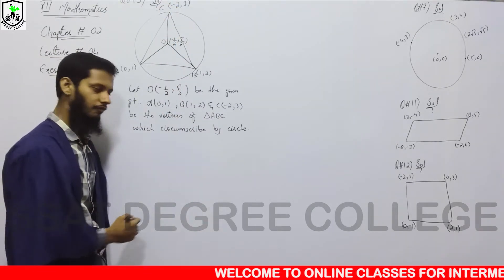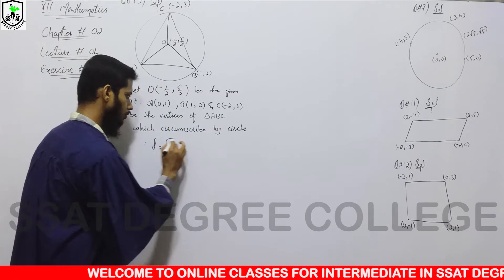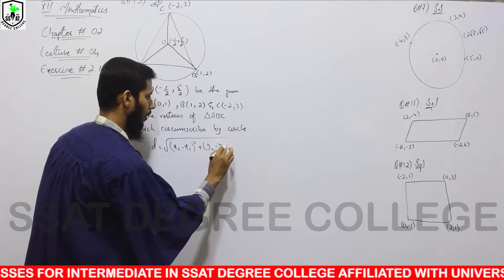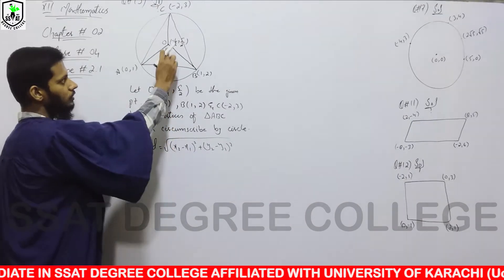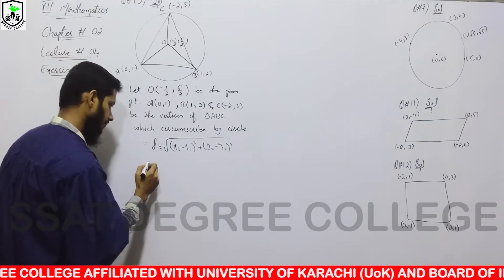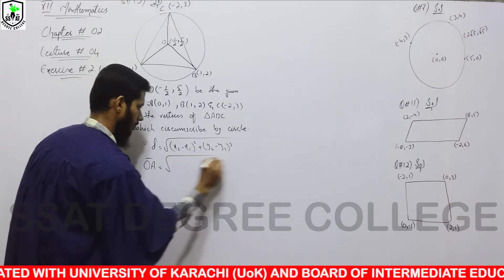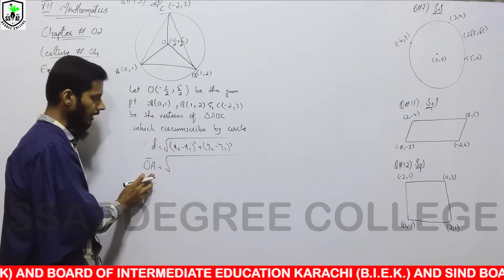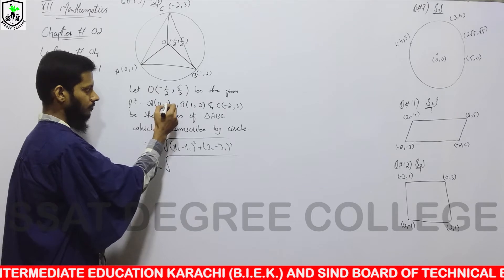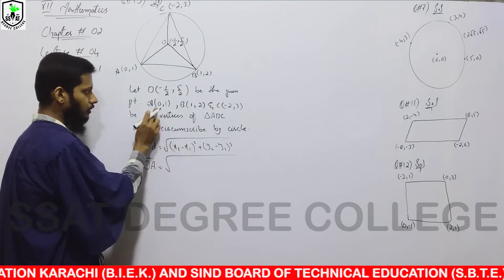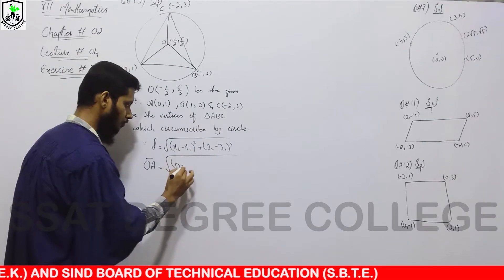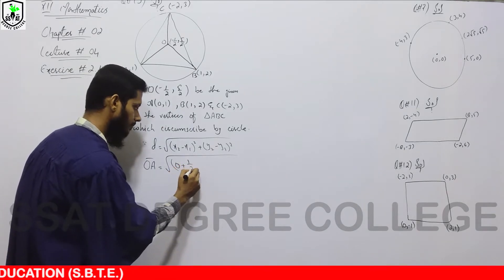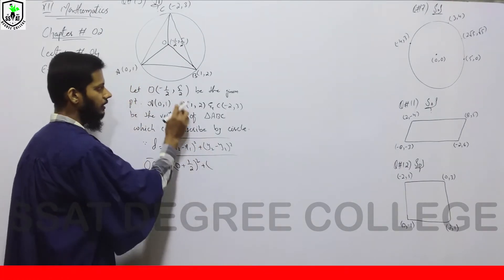Distance find करने हैं तो हम पहले distance formula का reference लेंगे: D = √[(x₂ − x₁)² + (y₂ − y₁)²]. पहले हम distance मालूम करेंगे O से लेकर A का. पहला point O है, इसके coordinates x₁, y₁; second point A है तो A के coordinates x₂, y₂. So x₂ − x₁: x₂ is 0, minus formula का x₁ is −1/2, यह minus और यह minus मिलकर plus हो जाएंगे.